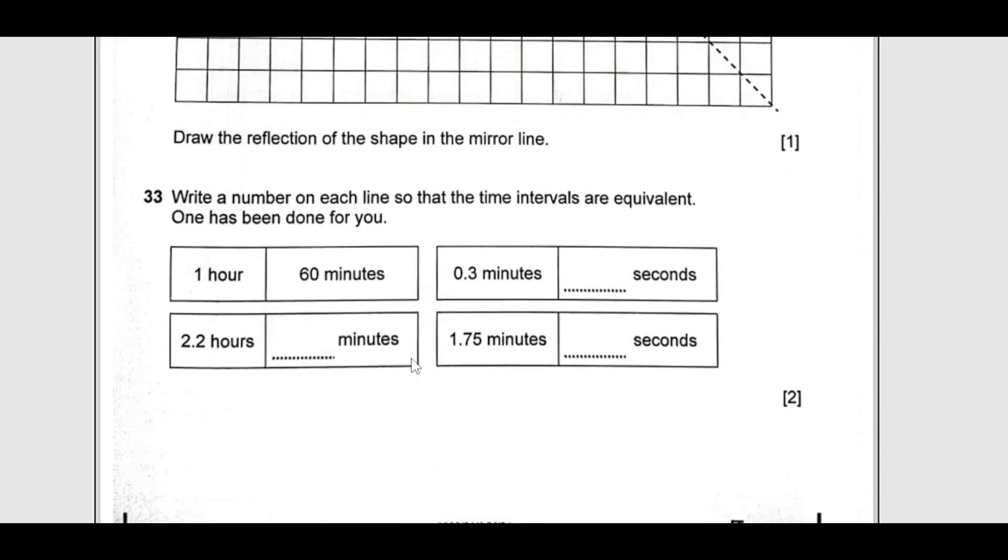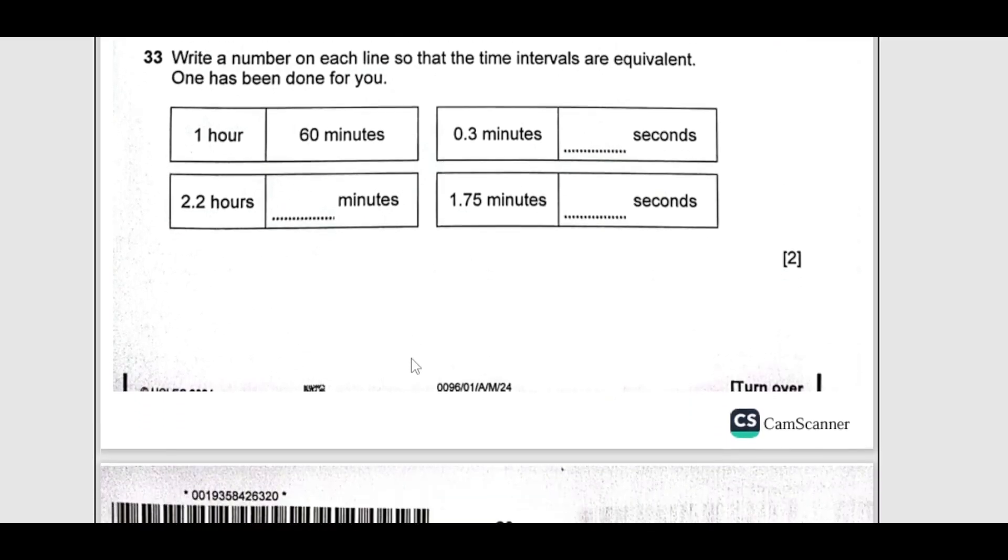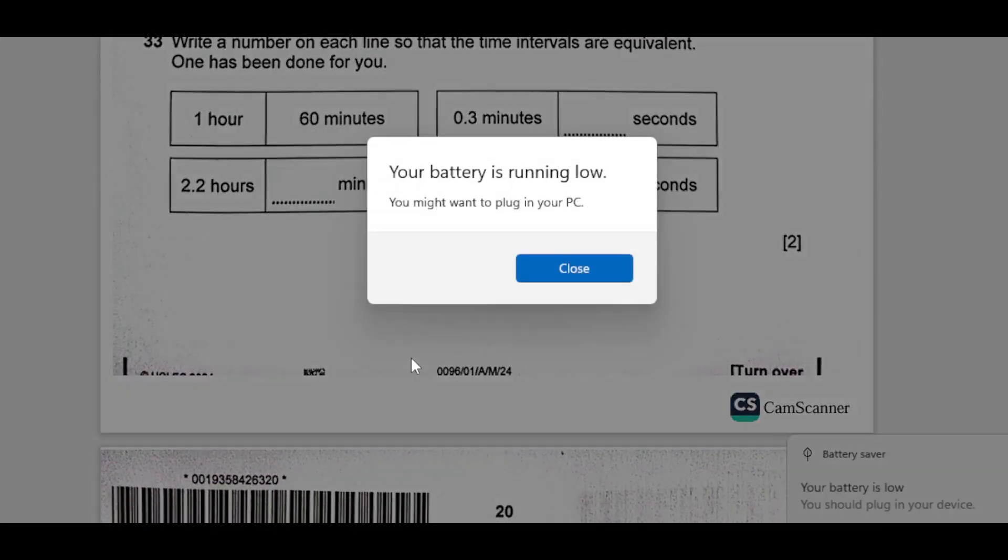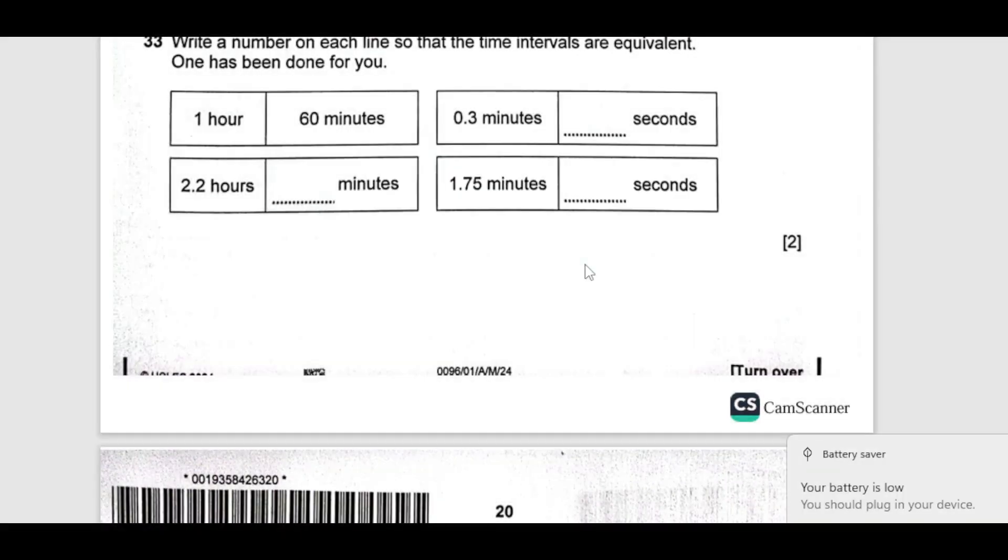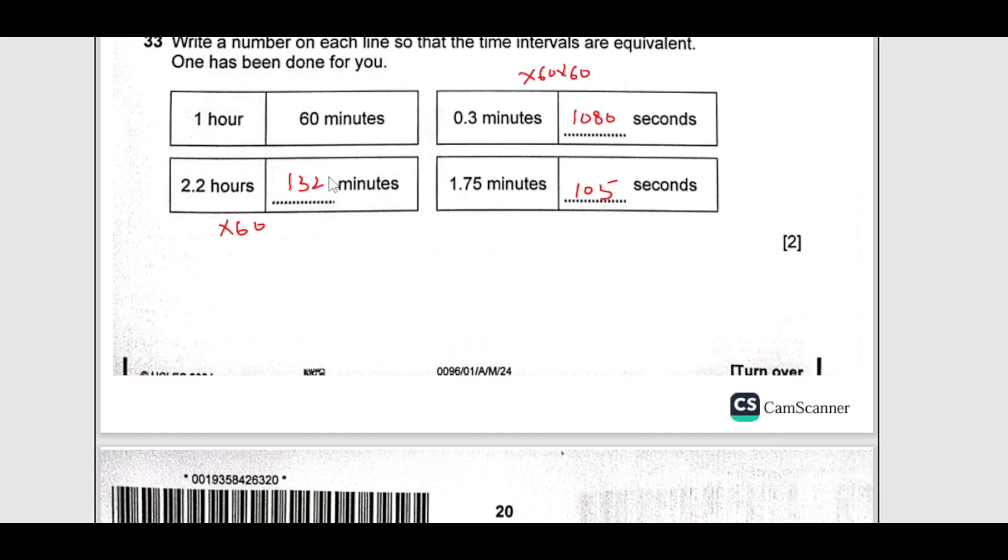Number 33, write a number on each line so that the time is equivalent. So the times are equal. This is 60 minutes. So this is 132 minutes. I have to make it faster actually, my battery is dying. 0, 105. Just multiply here by 60 to get this one. And here by 60 also, you are going to multiply 60 and 60 from here also.